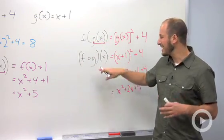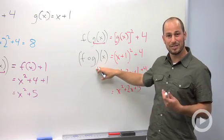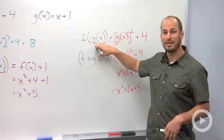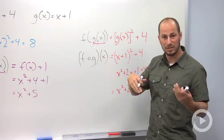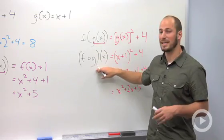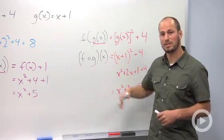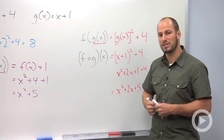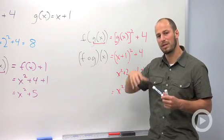In general, whenever I see this, I don't really like this notation too much, so I tend to rewrite it like this because this makes more sense to me going back to function notation. But these two statements are saying the exact same thing. So taking the composition of two functions: basically taking one function, plugging it into the other.